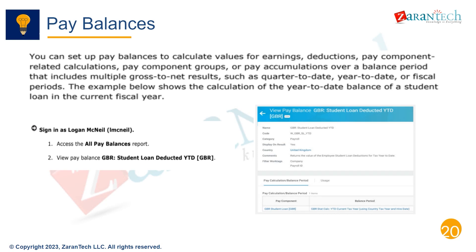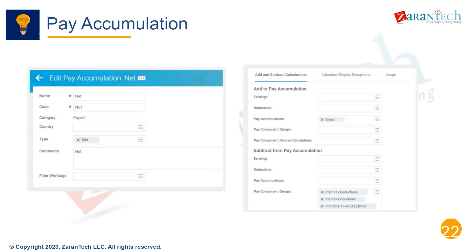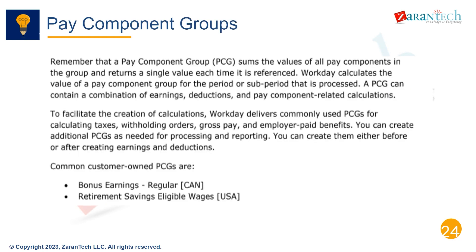Pay balances bring together all earning and deduction values. They start with the core balance like gross pay, then subtract deductions to determine net pay. Pay balances are accumulated over time and stored historically, allowing reporting on an employee's pay over any time period. Balances can be accumulated and reported at different frequencies — per check, monthly, quarterly, or annually — enabling flexible reporting for payroll analysis and external regulatory filings.